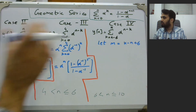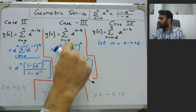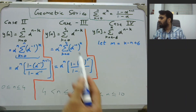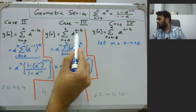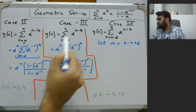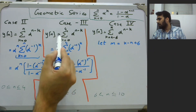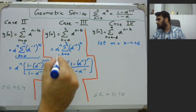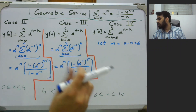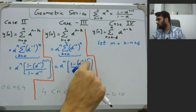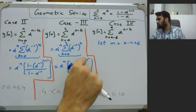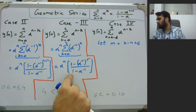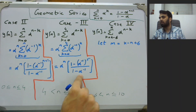For Case 3, the summation is k=0 to 4 of α^(n−k). Again we extract α^n out and apply the geometric series. Since the upper limit is 4, the exponent becomes 4+1=5, giving α^n · (1 − α^(−5)) / (1 − α^(−1)) as the closed-form expression for Case 3.